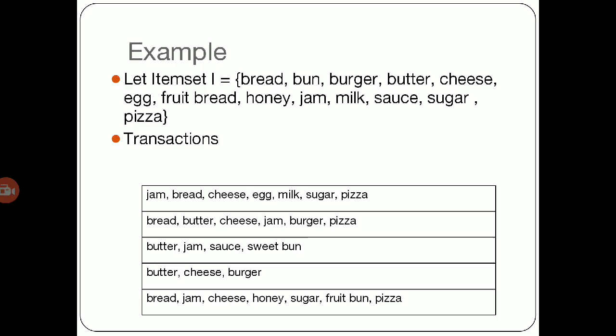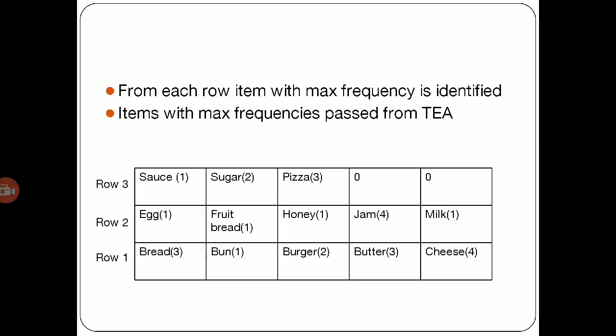Let's see an example of the transaction. Let's say we have the item set I as given: bread, bun, burger, butter, cheese, egg, fruit, etc. And the following is the table showing the transaction record. Let's say we have five transaction records of the customer, and our aim is to identify the item with the maximum frequency but in an efficient and fast manner.